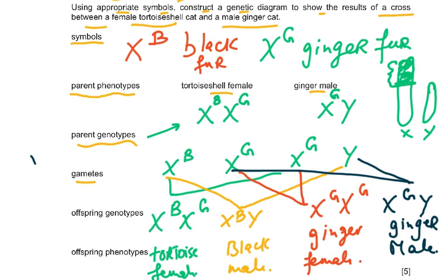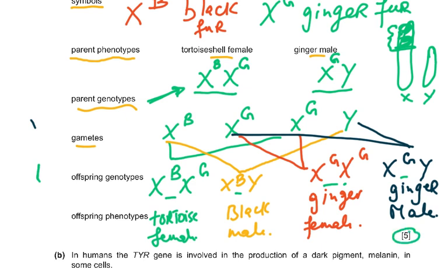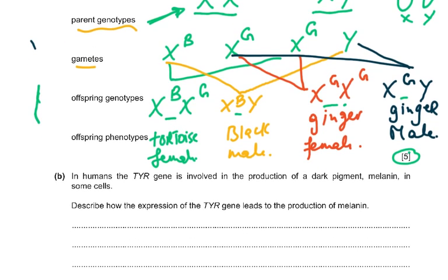Parent phenotype: tortoiseshell female and ginger male. Parent genotype: X^B X^G (tortoiseshell, co-dominant) and X^G Y (ginger male). Separate gametes for one mark. Offspring genotypes: X^B X^G (tortoiseshell female), X^B Y (black male), X^G X^G (ginger female), and X^G Y (ginger male). This is not a difficult genetics question and you could easily get five out of five.